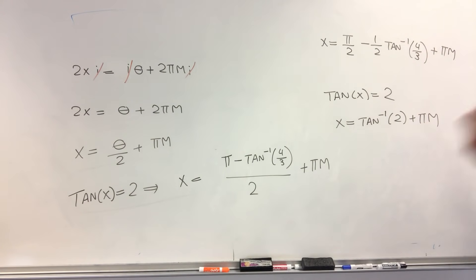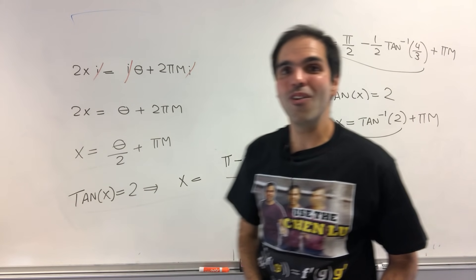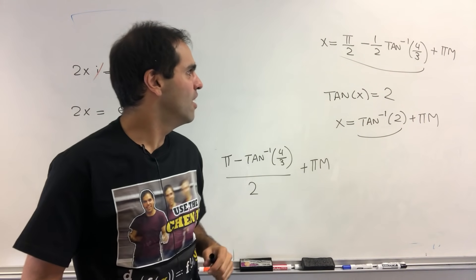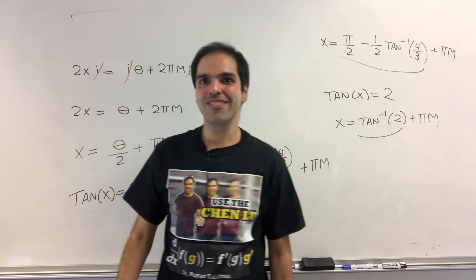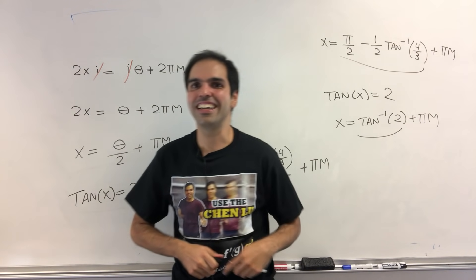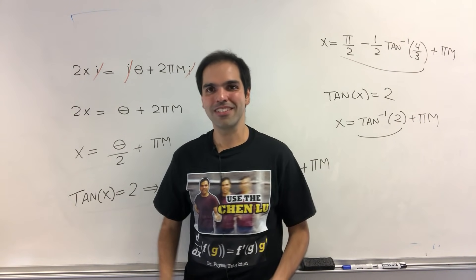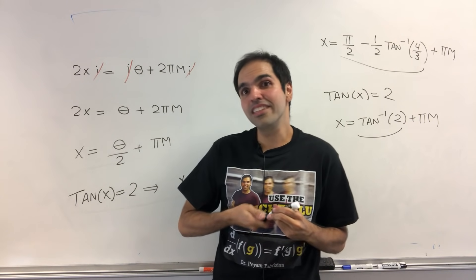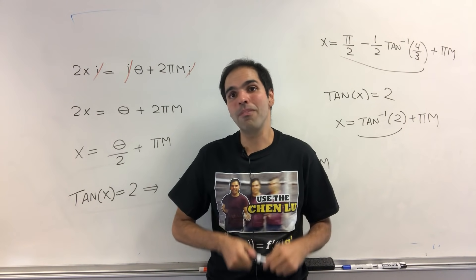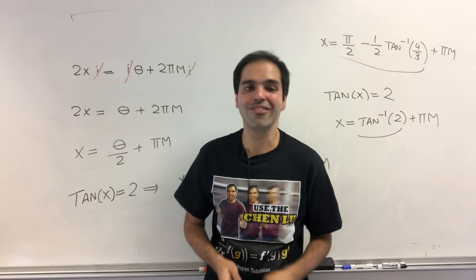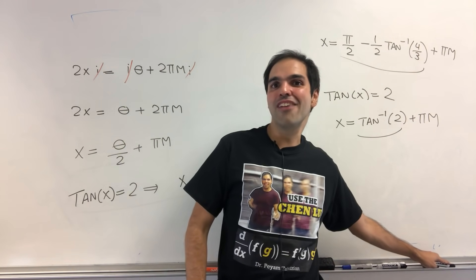However, I mean, maybe now we found some identity relating arctangent of 2 and pi over 2 minus 1 half arctangent of 4 thirds. Again, maybe I discovered a new trig identity, but probably not. Still, kind of fun to see that sometimes you can go to the complex world and then go back to the real world. So I think not everything is lost.